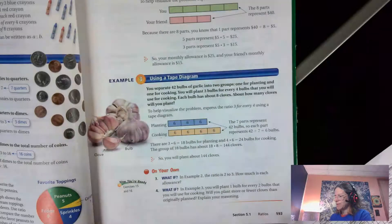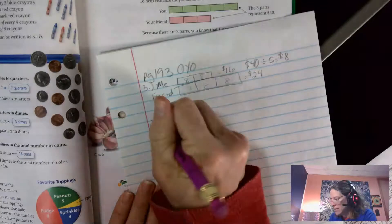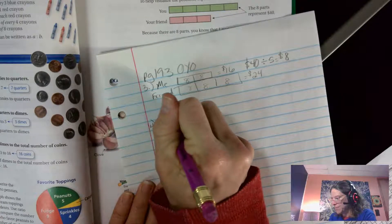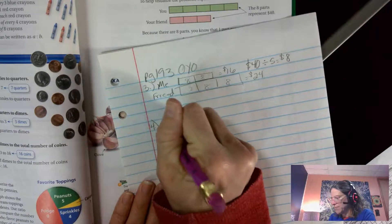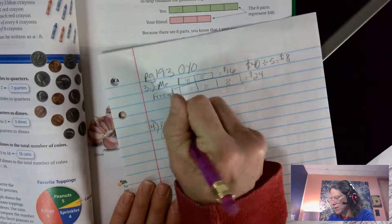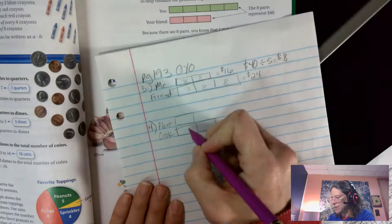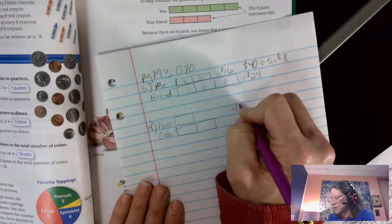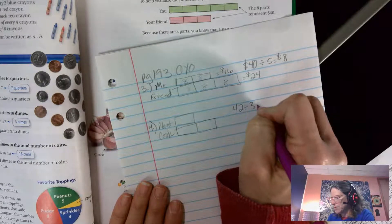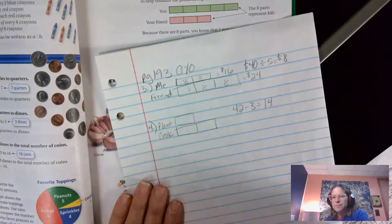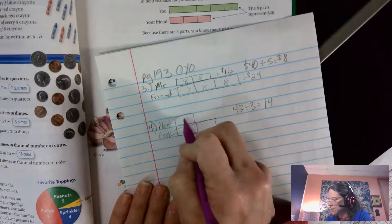Okay, so here's my planting, here's my cooking. I have one to two. That's three sections. 42 divided by my three sections is 14. Each section is worth 14.